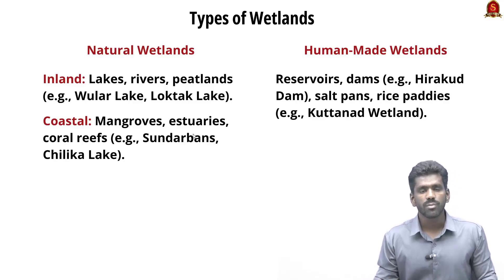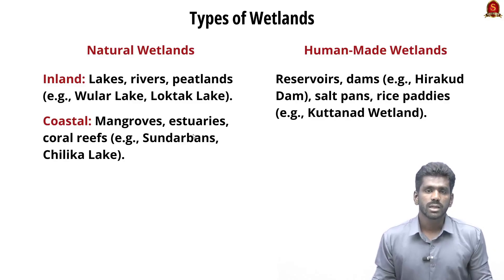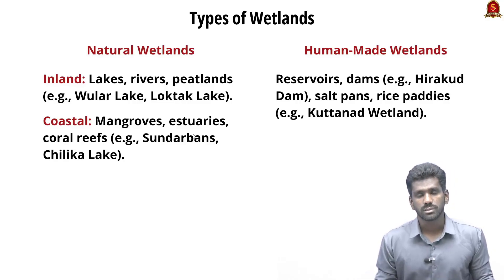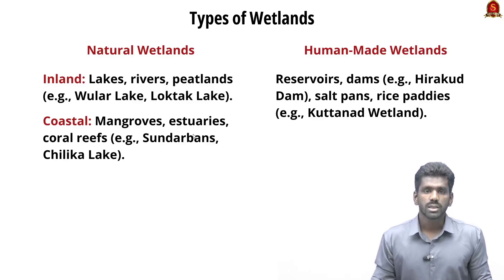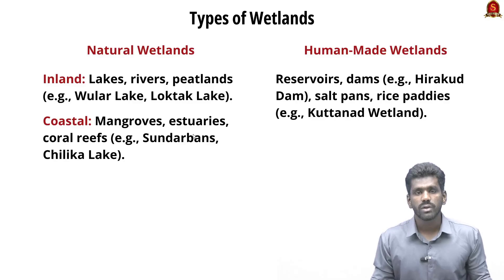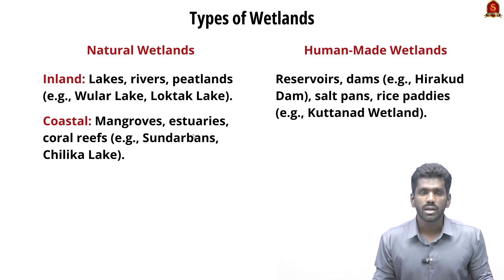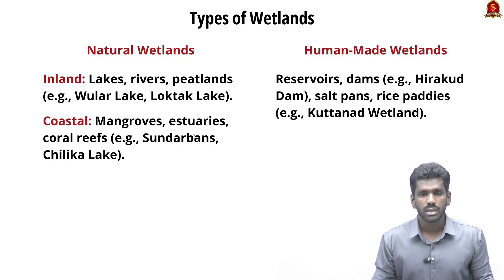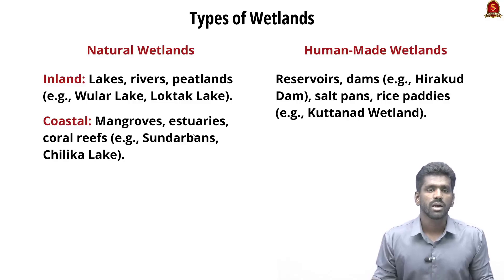There is another type called human-made wetlands. Reservoirs, dams and irrigation tanks are also wetlands. Salt pans, aquaculture ponds and rice paddies also come under the definition of wetlands. For example, the Kuttanad wetland in Kerala is a large rice paddy and low-lying field that also comes under the definition of wetland.